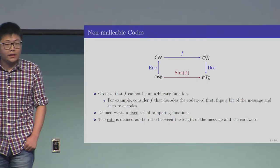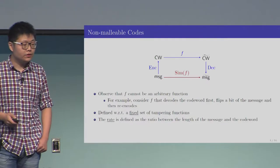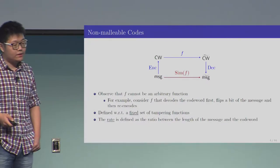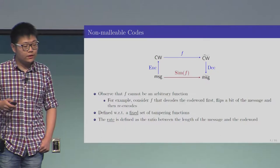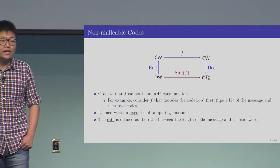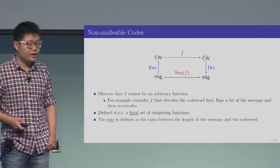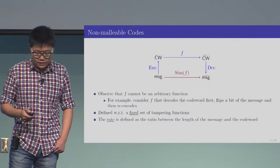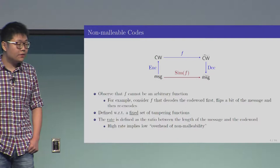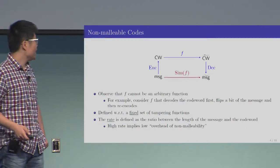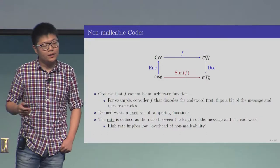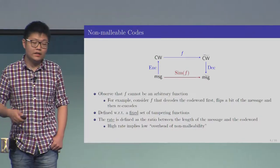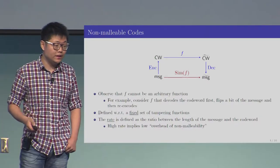Just like error-correcting codes, we define the rate as the ratio between the length of the message and the length of the codeword. Intuitively, high rate here implies that the overhead of achieving non-malleability is low.